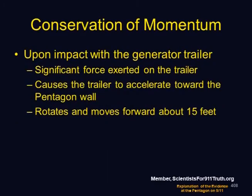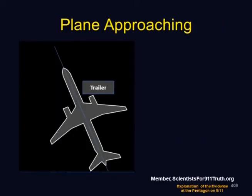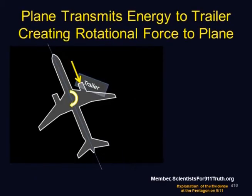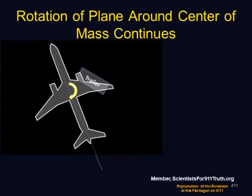The plane transmits energy to the trailer, creating rotational force on the plane. Rotation of the plane around the center of mass continues; in the remaining 80 or so feet the rotation won't change much, but it does appear to continue. The impact sequence within about 100 feet of the Pentagon: the plane impacts the diesel generator trailer, the wire spools, and the retaining wall. The right engine impacting the diesel generator causes the plane to rotate; the trailer physically moves, absorbing energy from the right side of the plane's momentum.